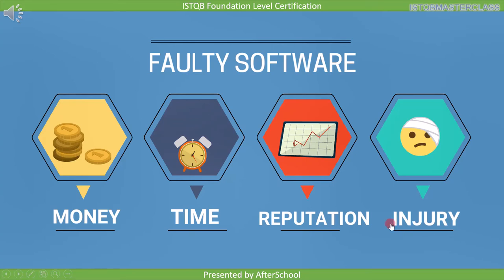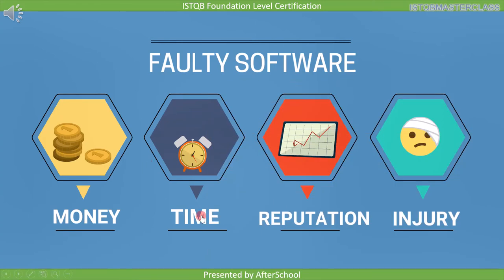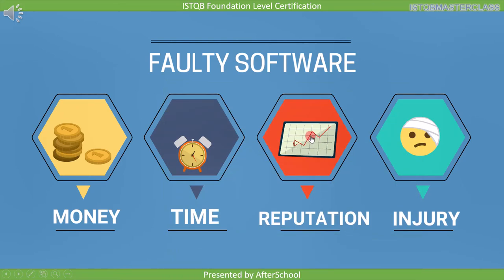Now let's see some real-time examples to understand this. There was news that one particular car company recalled 2,000 of its cars due to an issue with the front passenger airbag. Once such news hits the market, the share value of the company goes down and results in huge loss of money. Once these cars are in the garage, they undergo repair and at the same time the company has to do damage control — all this takes lots of effort and time. In 2014, there was a breach in the security aspect of eBay software, meaning the software was not working as expected, and such news results in loss of reputation.